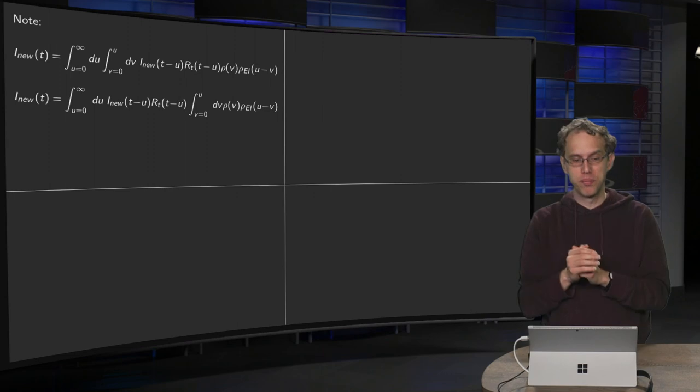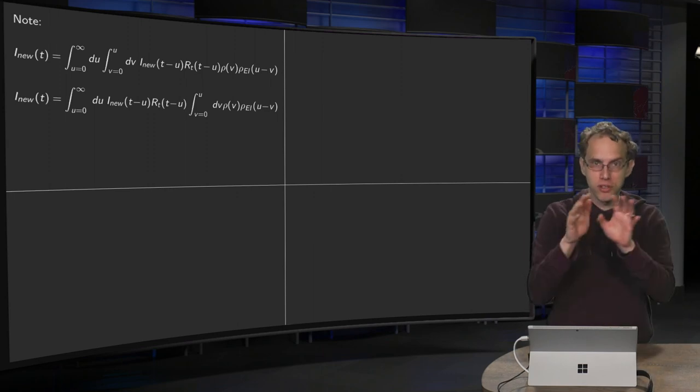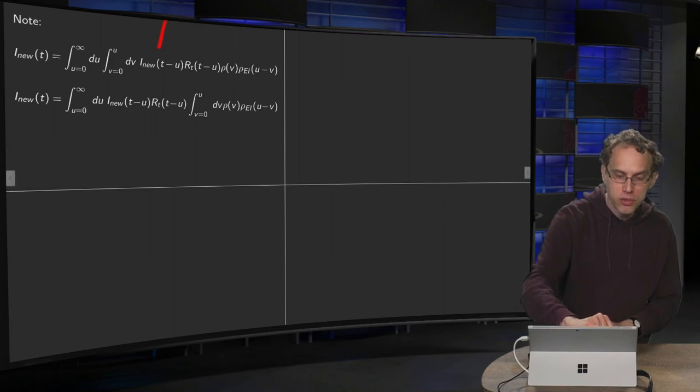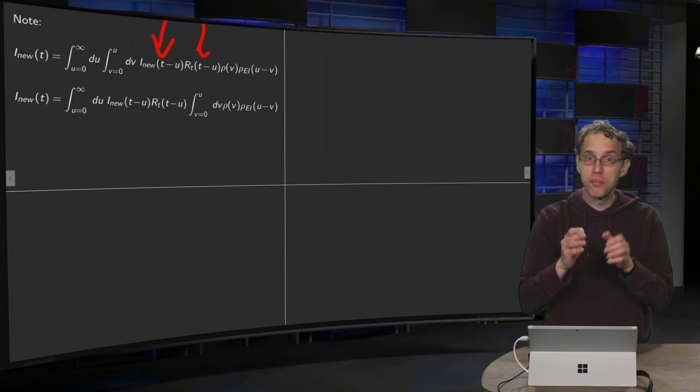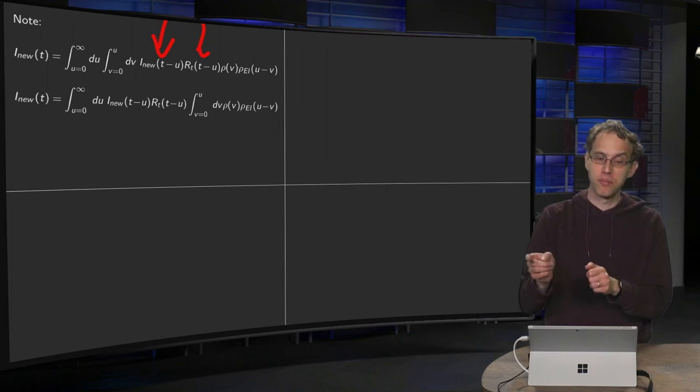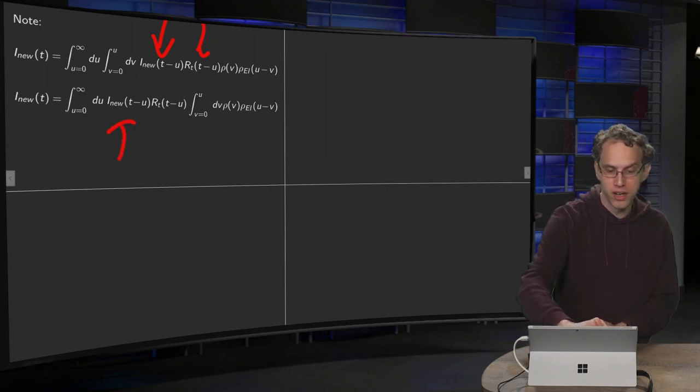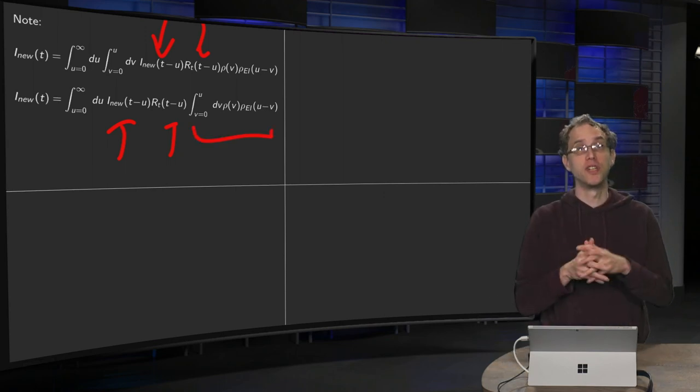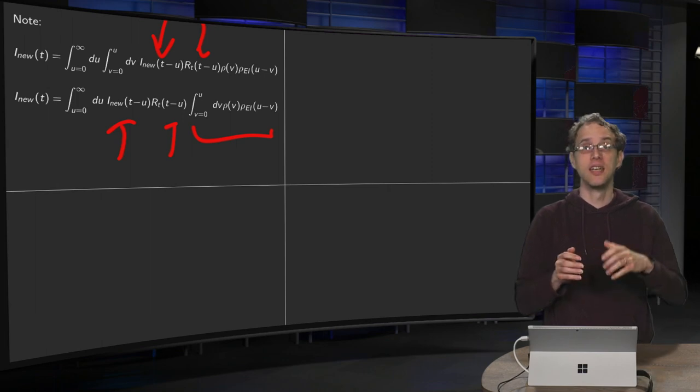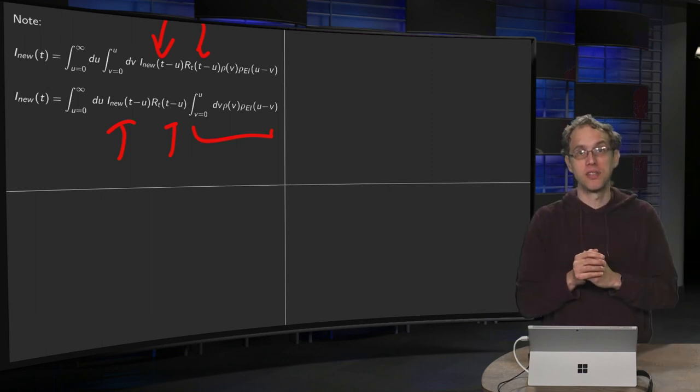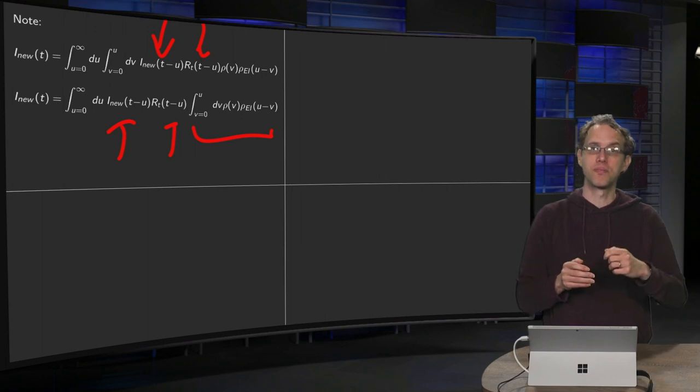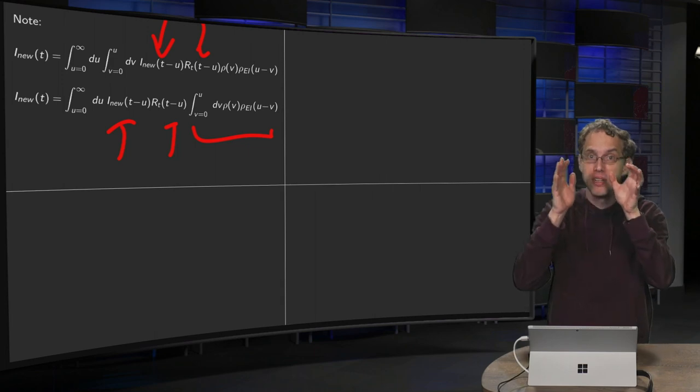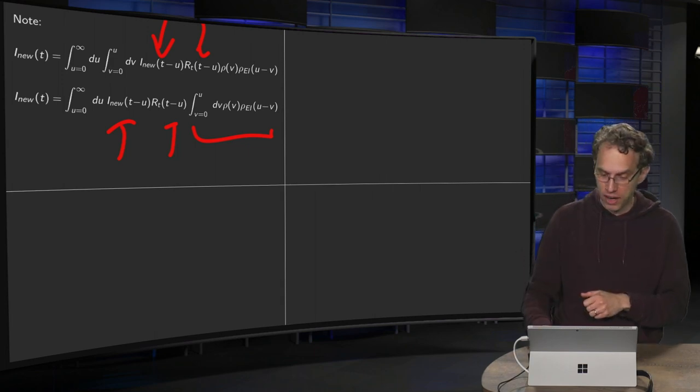So we can take that in front of the v integral as follows. So I just copied the previous formula, so nothing changed with respect to the previous formula. And then we can take these two terms over here. Those only depend on u, so you can take them in front of the v integral, so there they go. And what you have left over here is one v integral which only depends on your probability densities. And we expect that we know those probability densities, or that we know how to model them. So the idea is that you can compute the second integral beforehand.